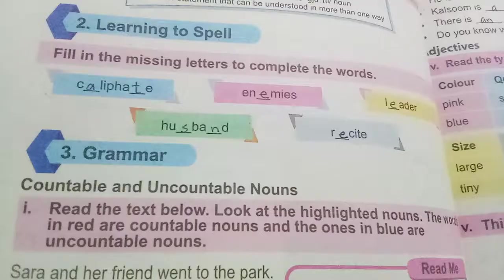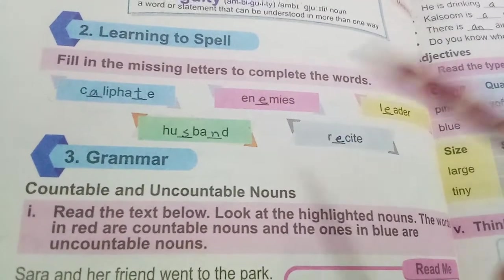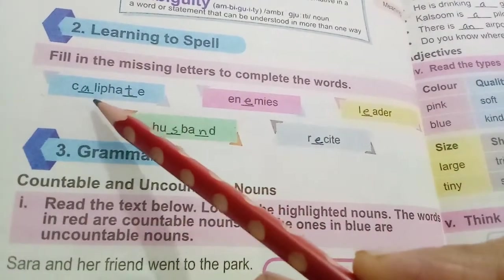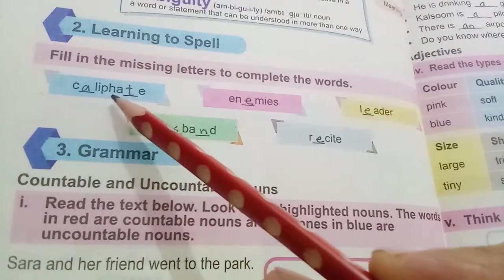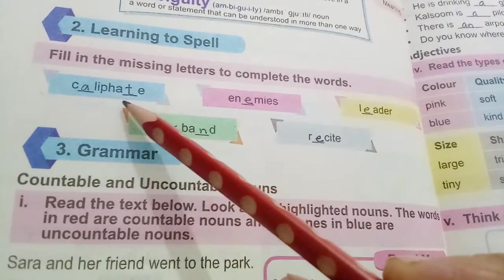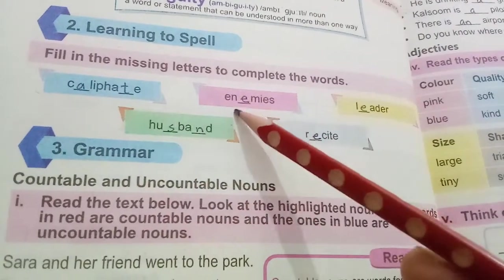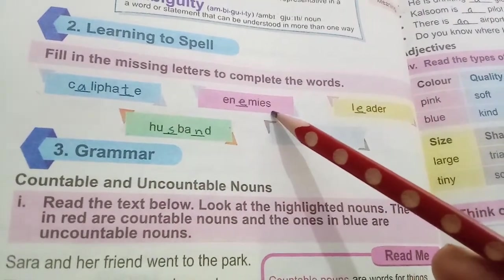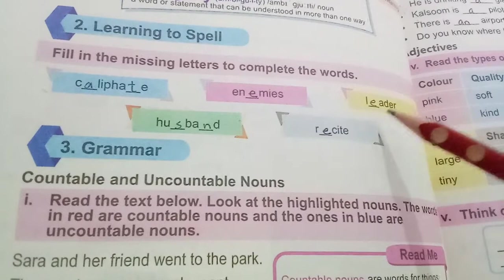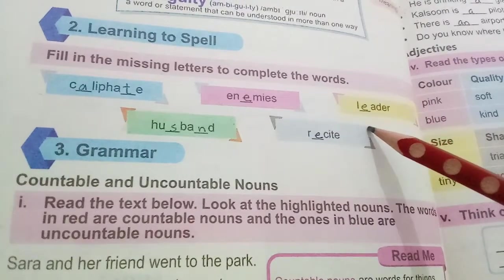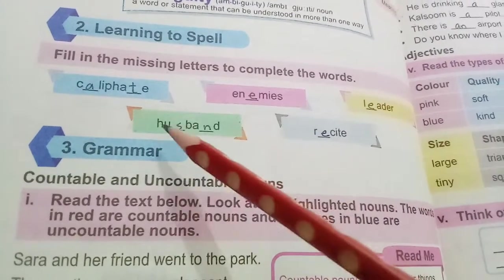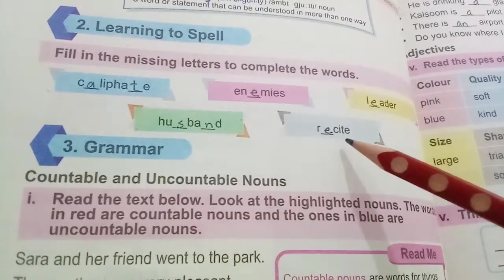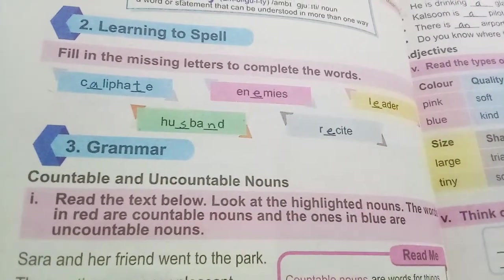Fill in the missing letters to complete the words: c-a-l-i-p-h-a-t-e (caliphate), e-n-e-m-i-e-s (enemies), l-e-a-d-e-r (leader), h-u-s-b-a-n-d (husband), r-e-c-i-t-e (recite).